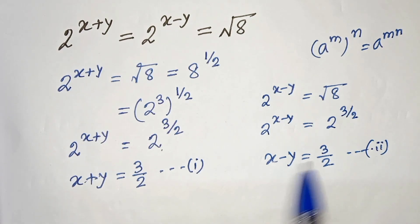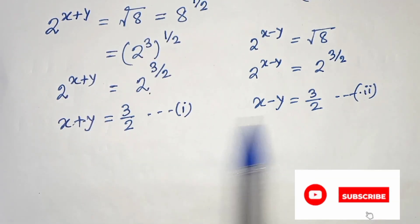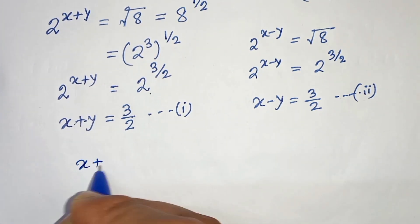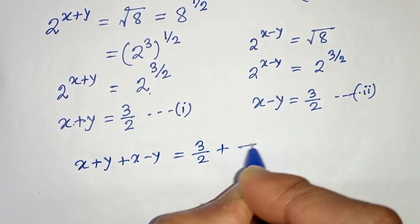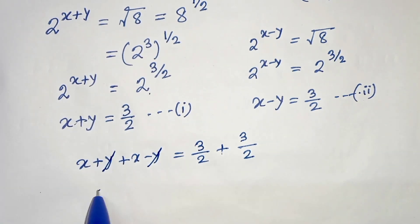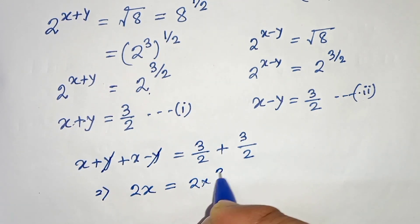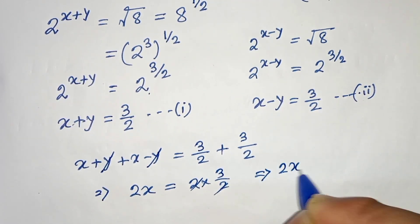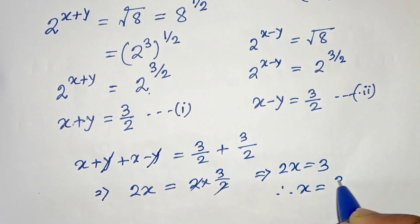Now let's solve these equations. If we add the two equations, we will get x plus y plus x minus y equals to 3 by 2 plus 3 by 2. The plus y and minus y get cancelled. We will get 2x equals to 2 times 3 by 2. The 2s cancel, so we get 2x equals to 3. Therefore x is equals to 3 by 2.